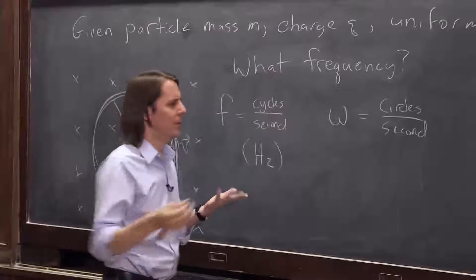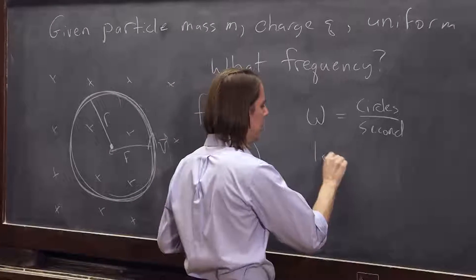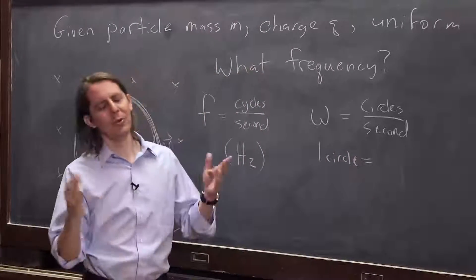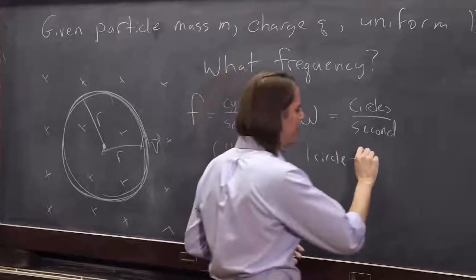Circles per second. What is that? What's a circle? It's 360 degrees. Oh, but we don't use degrees either. A circle is two pi radians.